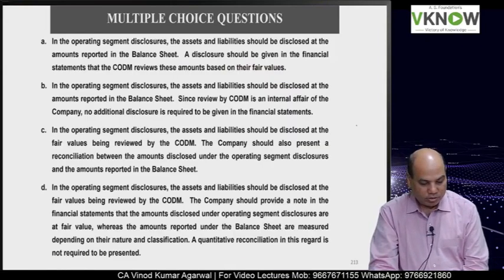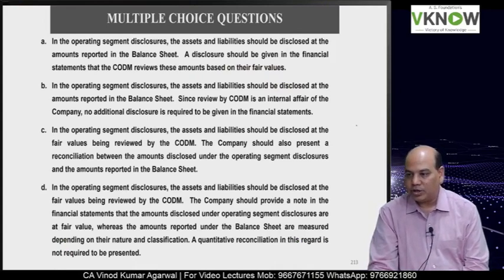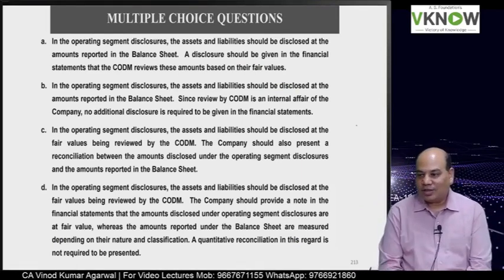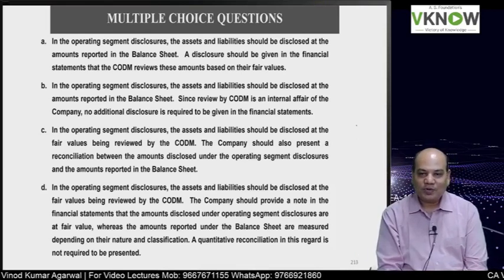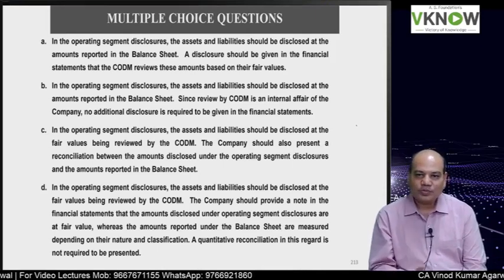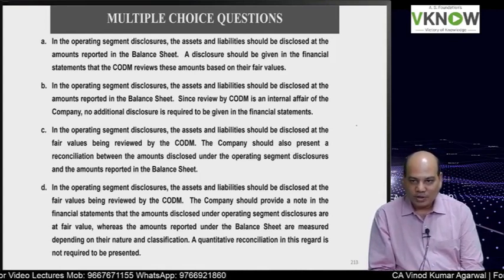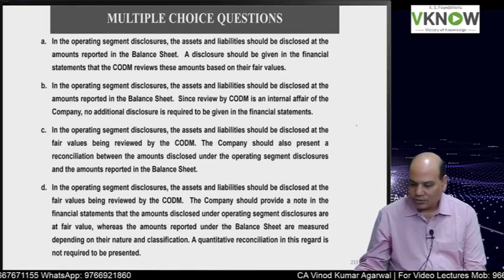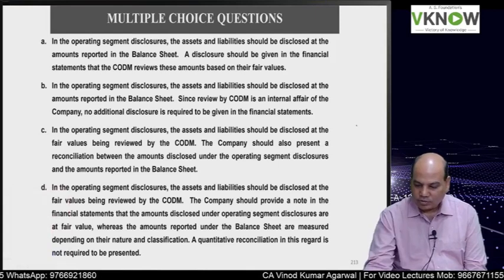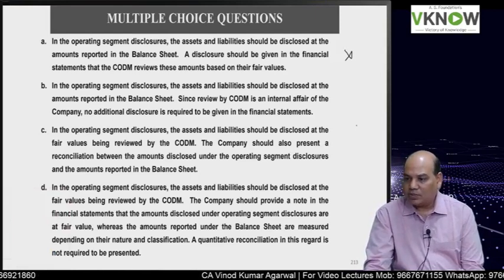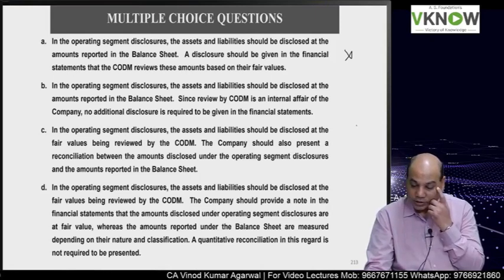This is a very advanced level MCQ with options very close to each other - you really need to know your concepts well. Option A: In the operating segment disclosure, assets and liabilities should be disclosed at the amount reported in the balance sheet. This is wrong, because you do not have to report as per the balance sheet - you can have a different measurement basis and a disclosure should be given.